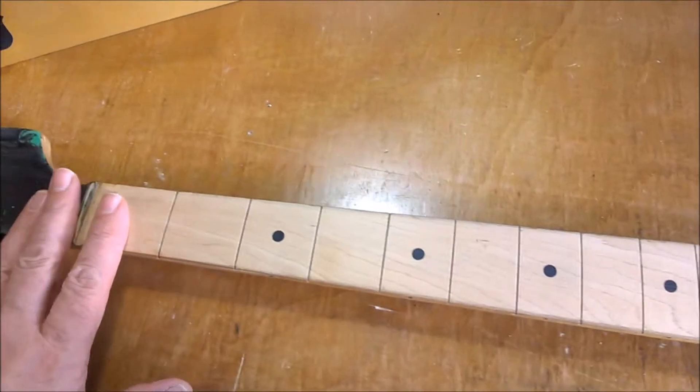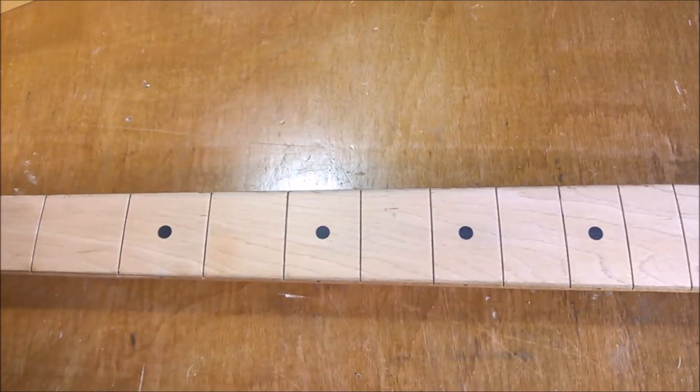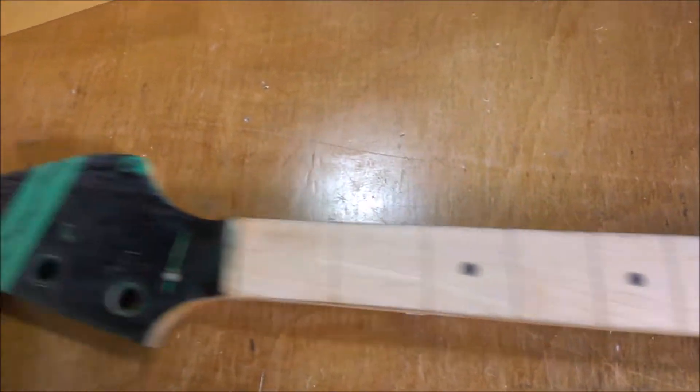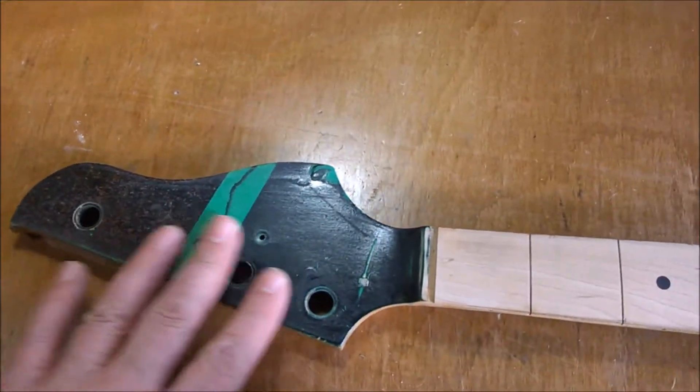So it's a nine and a half inch radius all the way along, nice and straight and flat. It looks like a really nice piece of maple, this fretboard, so it's going to look good when it's varnished.